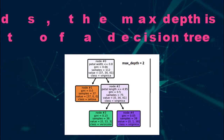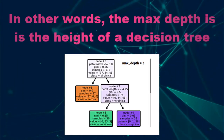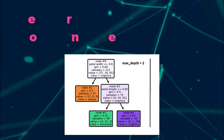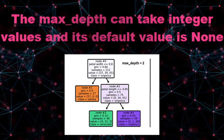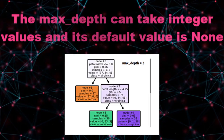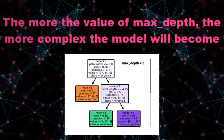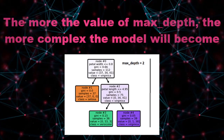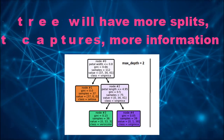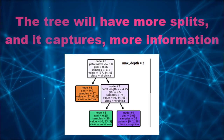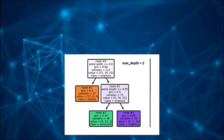If max depth is set to none, then nodes are expanded until all leaves are pure, or until all leaves contain less than the value of the minimum sample split parameter. The more the value of max depth, the more complex the model will become. This is because the tree will have more splits and it captures more information about the data. This is one of the basic reasons for overfitting in decision tree models.